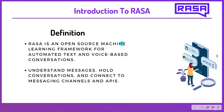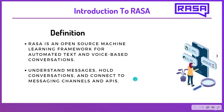As per the definition, Rasa is an open source machine learning framework for automated text and voice based conversations. It understands messages, holds conversations, and connects to messaging channels and APIs. In layman's terms, Rasa is smart enough for holding down your conversation and keeping all your conversations in databases.